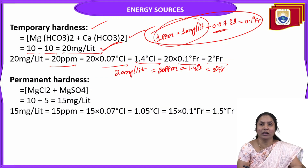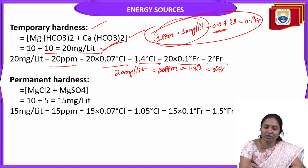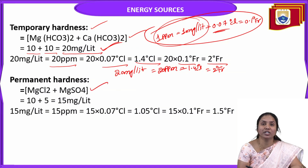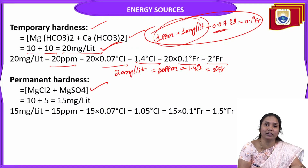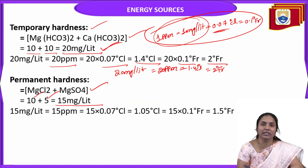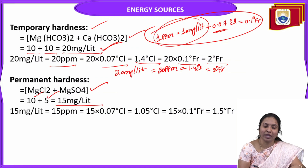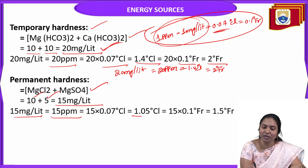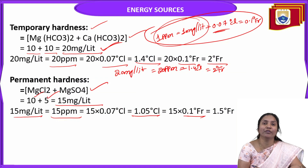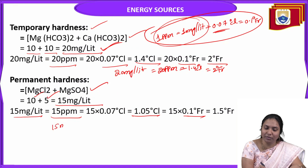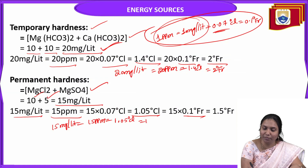Permanent hardness = 15 mg/L = 15 ppm. Converting: 15 × 0.07 = 1.05 Clerk's degrees; 15 × 0.1 = 1.5 French degrees.